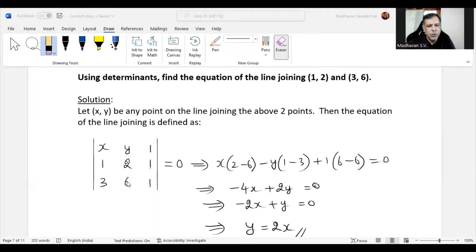which means we will get x times (2 minus 6) minus y times (1 minus 3) plus 1 times (6 minus 2) and that is equated to 0.